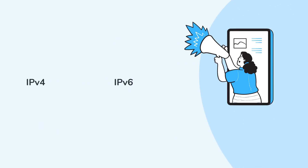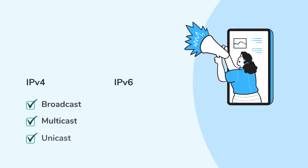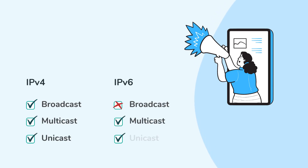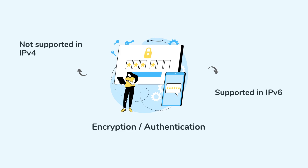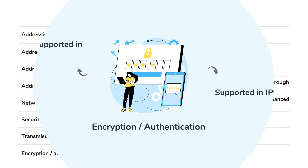IPv4 supports broadcast, multicast, and unicast, while IPv6 supports multicast and unicast only. Encryption and authentication are not supported in IPv4 but are supported in IPv6.